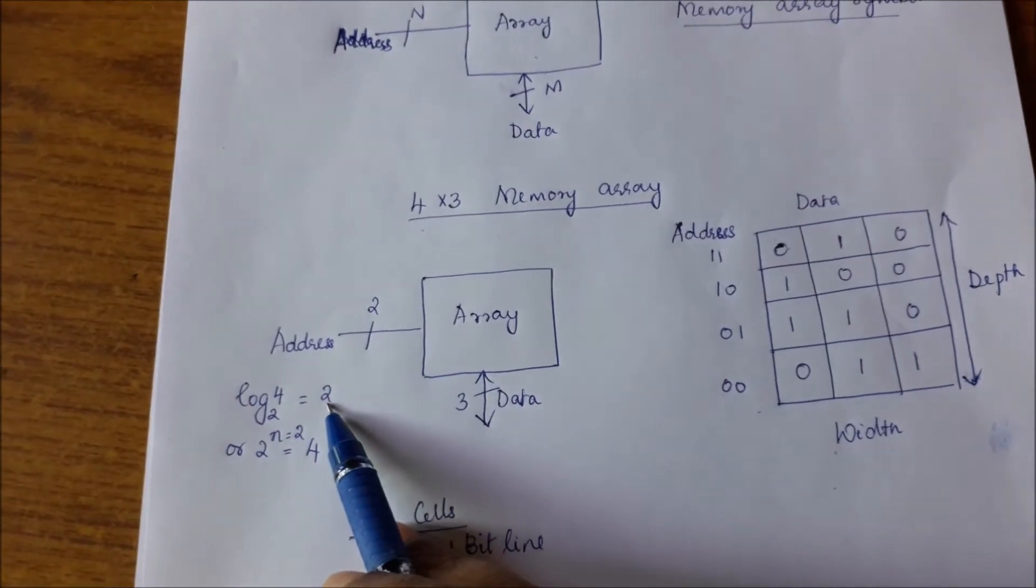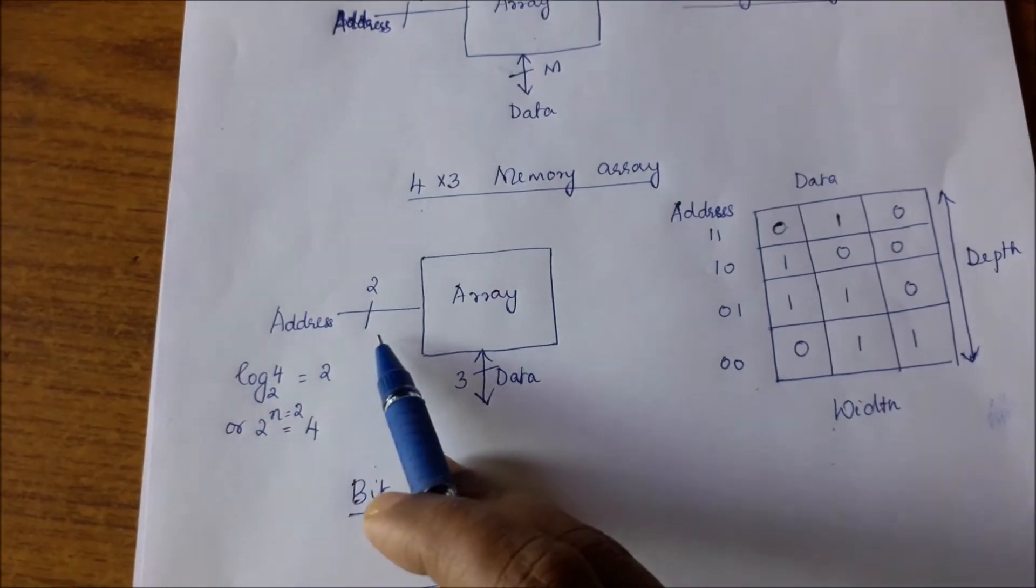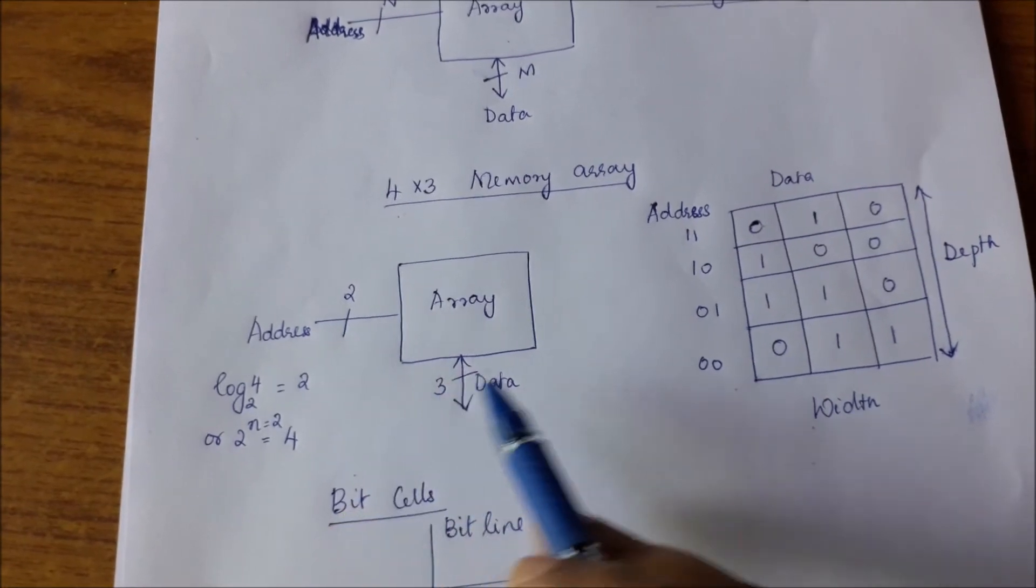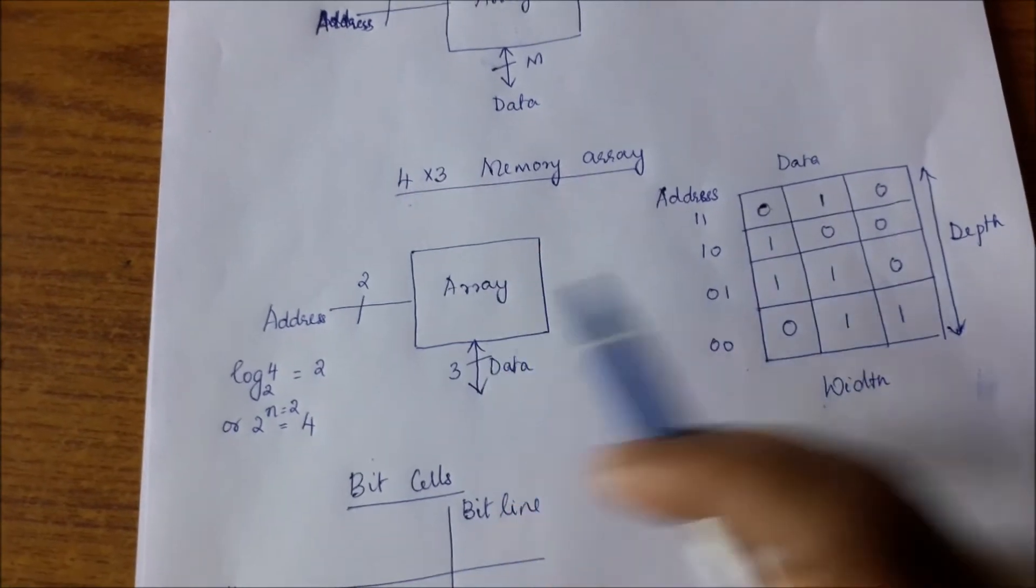If we want to look at it mathematically, log 4 to the base 2 is 2, or 2 raised to n where n equals 2 is 4. So you have 2 address lines, and as you know there are 3 data bits in each of the words.